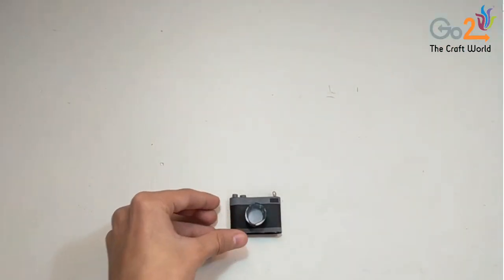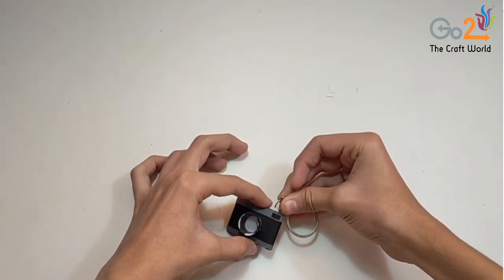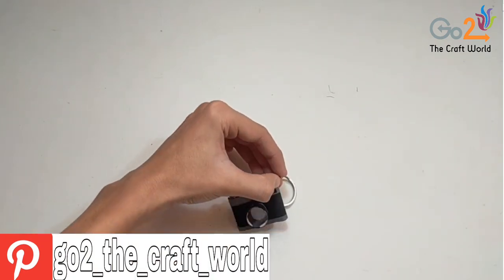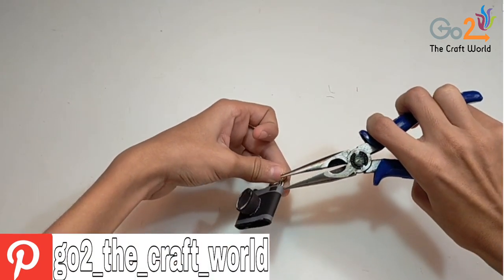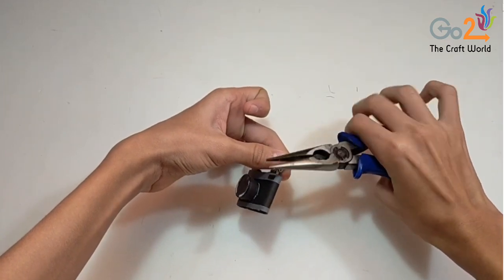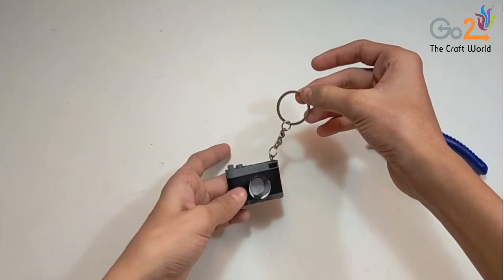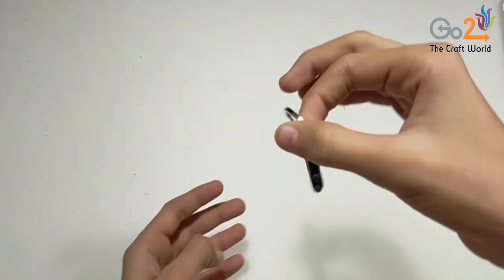So let it dry for some time and we will add the keyring to it. So it will look like this after drying.